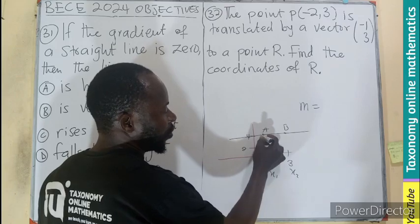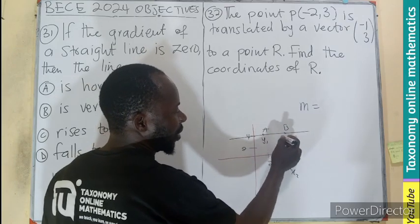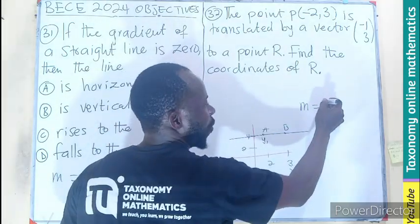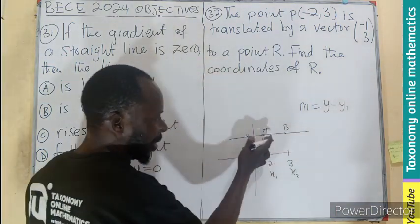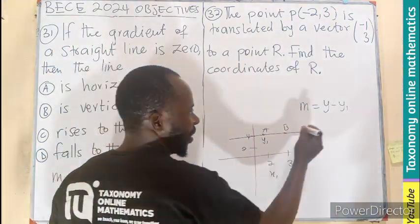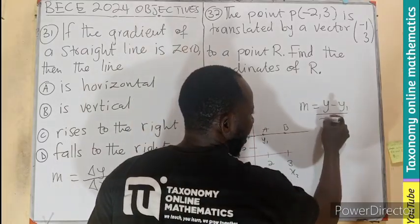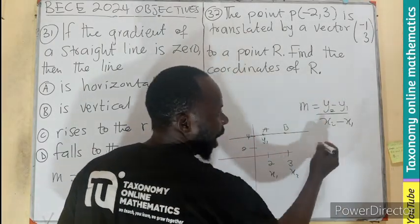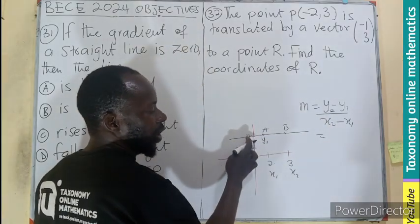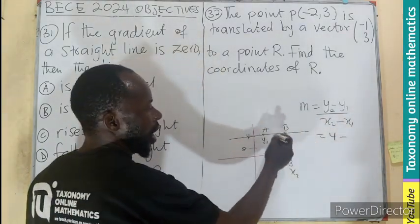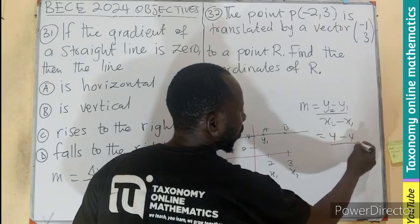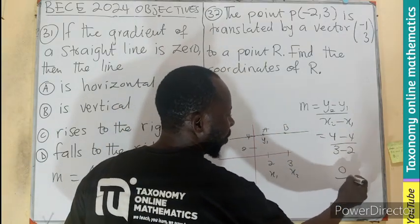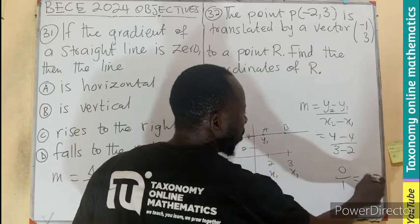x1, here is going to be your y1 value. It's going to be y2 minus y1. Is there the same point? So I'll be having x2 minus what? x1. Let me use the same point. For the y1, I'll be getting four. For the y2, I'll be getting four. Then x2 will be three. So we're having zero divided by one, which will give you zero.